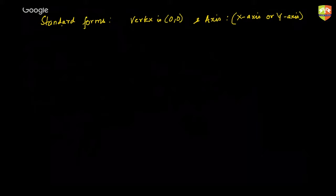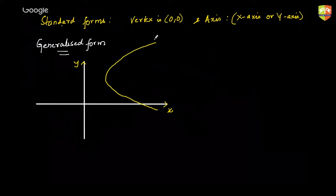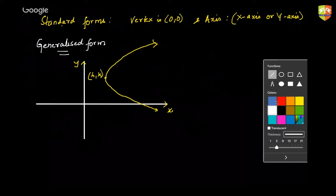Now we are going to learn something called the generalized form. When I say generalized form, the vertex will not be at the origin. Your axis of the parabola would be parallel to the x-axis or parallel to the y-axis. So let me draw a typical diagram of a generalized case — if I draw a parabola where the vertex is now at some point (h, k) and the axis of the parabola is parallel to the x-axis.